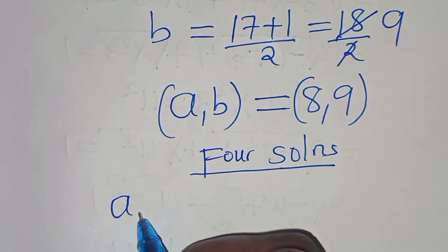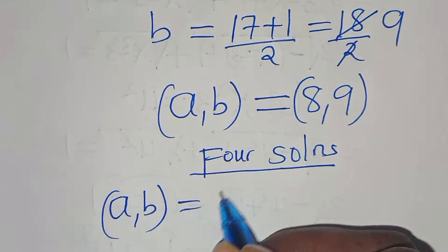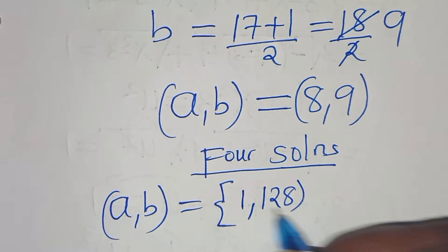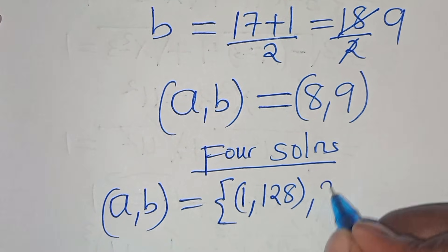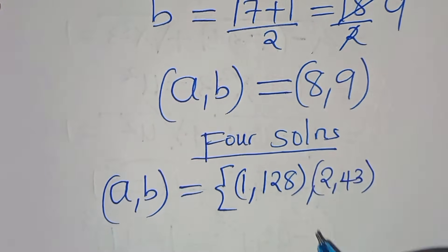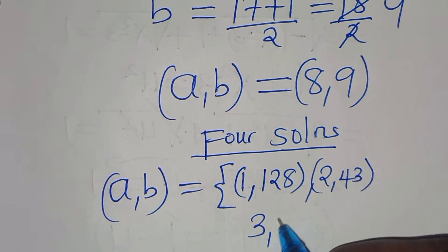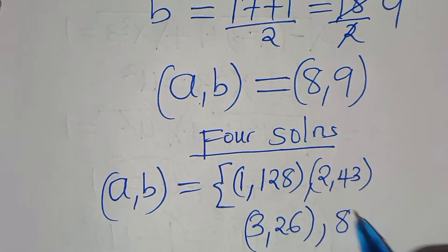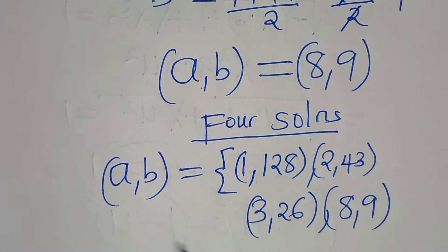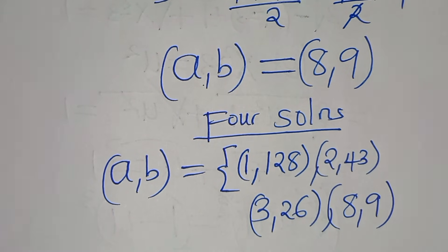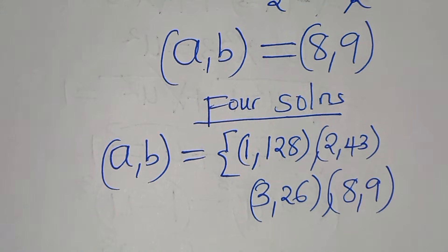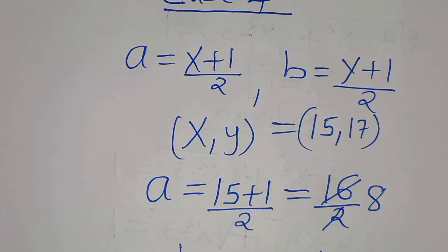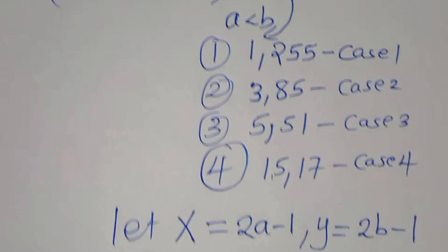In summary, we have four solution sets: (a, b) equals (1, 128) for Case 1, (2, 43) for Case 2, (3, 26) for Case 3, and (8, 9) for Case 4. These are all the solutions for this algebra problem. Please like this video and subscribe — see you in the next video, bye bye!